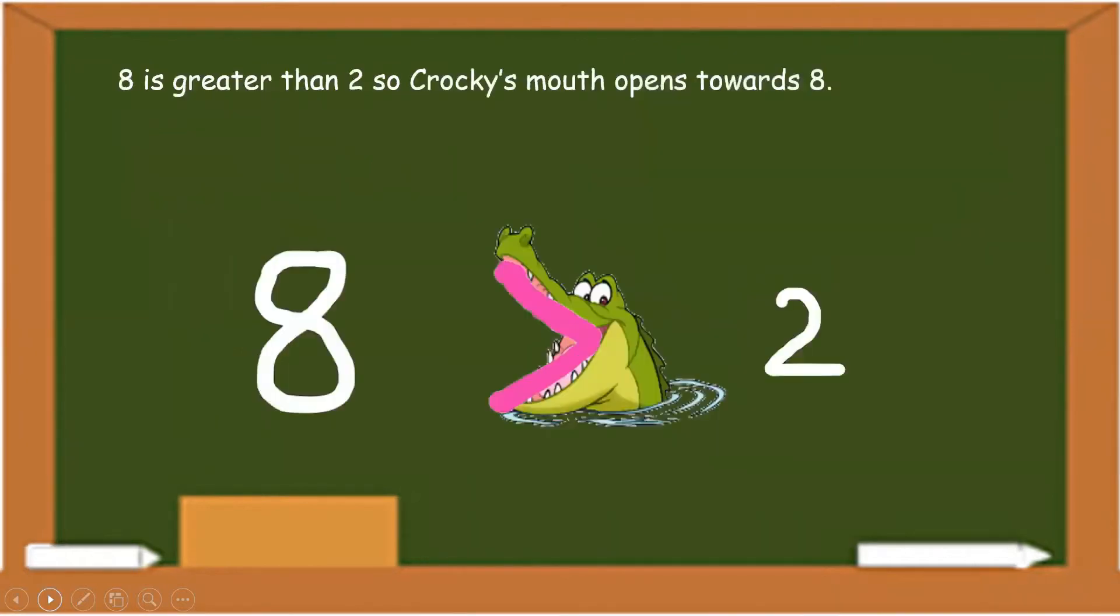Let me explain one more example. We have eight and two. Eight is more than two or eight is greater than two. So Crocky's mouth will always open towards eight.